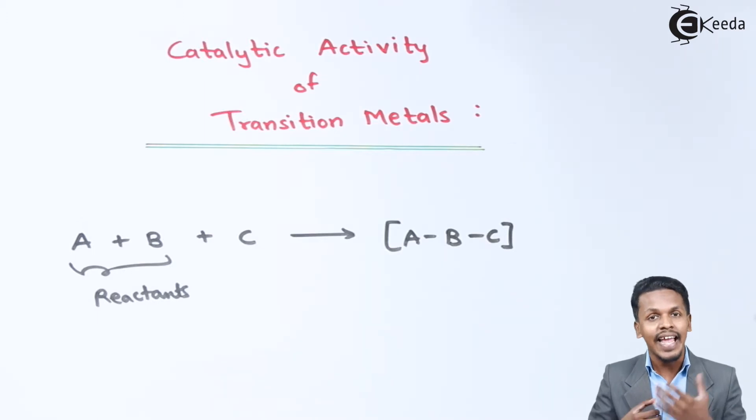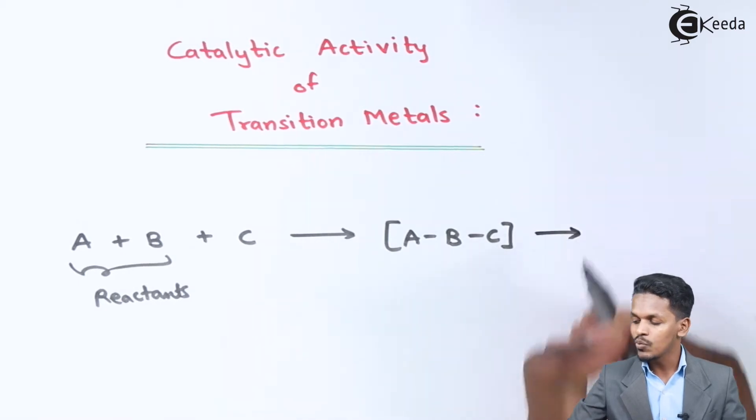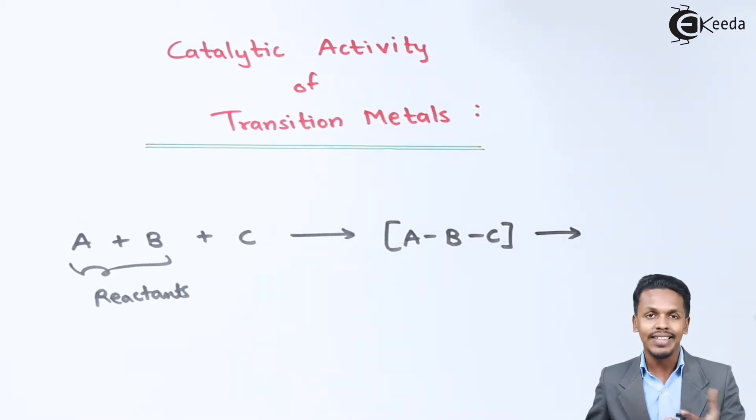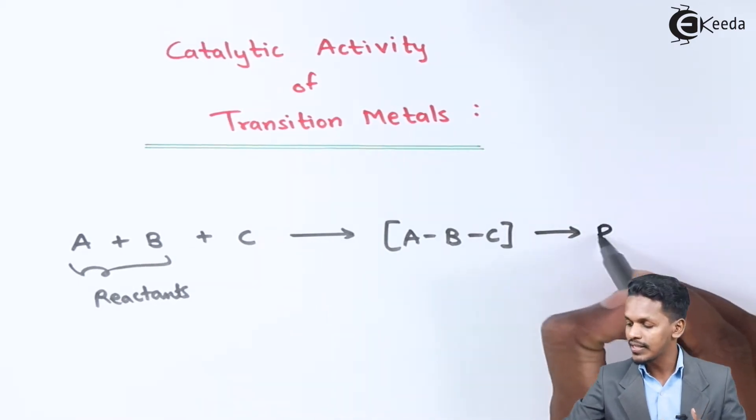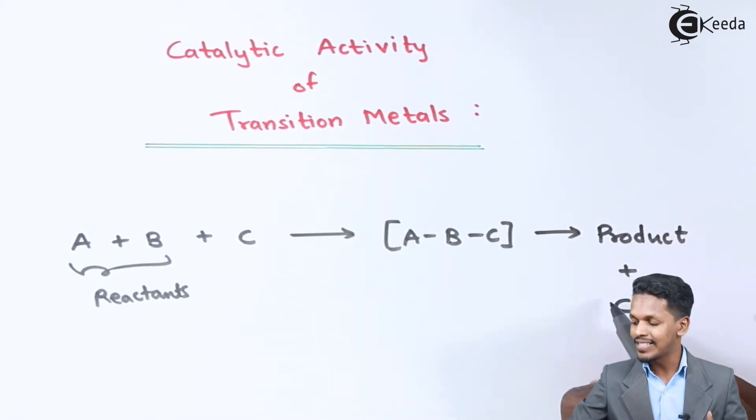The catalyst has the activity to change the path so we can get lower activation energy. Once the complex has been formed, it gives us different products and those products are free from the catalyst, so the catalyst gets removed.